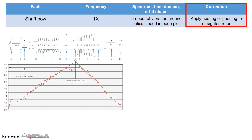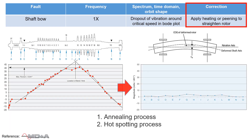Through an iterative process of annealing and hot spotting, the shaft undergoes straightening, resulting in reduced mass imbalance in the rotor. After straightening the shaft, you must rebalance the shaft.